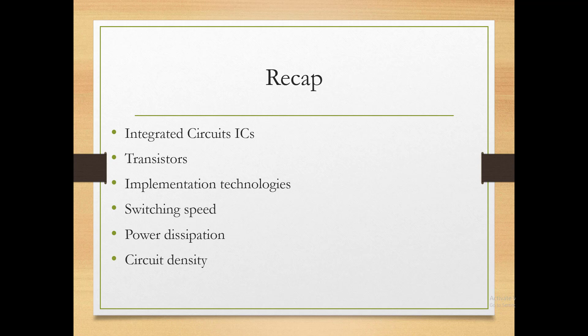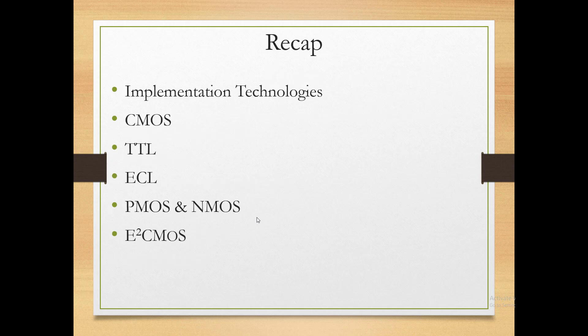We have learned about integrated circuits (ICs) and their technology — that transistors are used to implement gates. There are different implementation technologies. These technologies differ from each other in terms of switching speed, power dissipation, and circuit density. Number one: CMOS — switching speed is a bit slow but comparable to TTL, and CMOS has higher chip density than TTL.